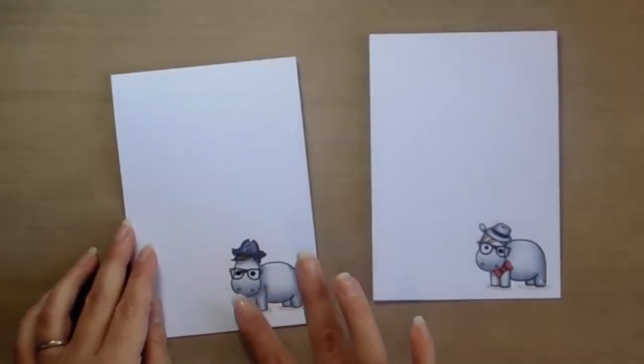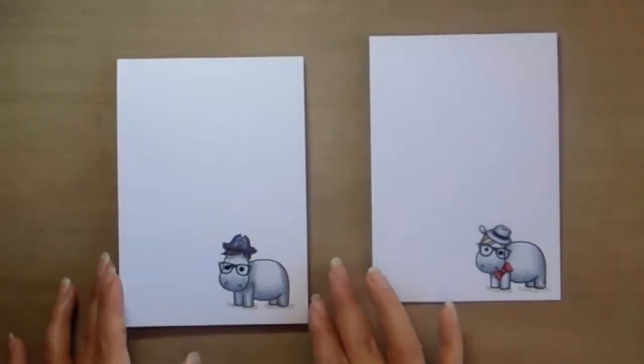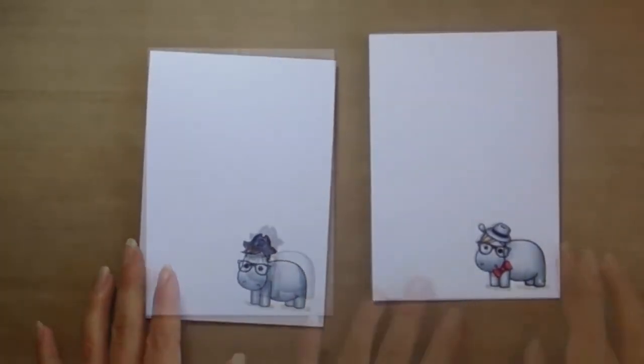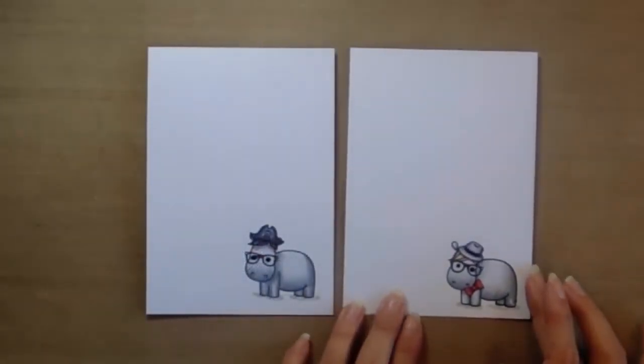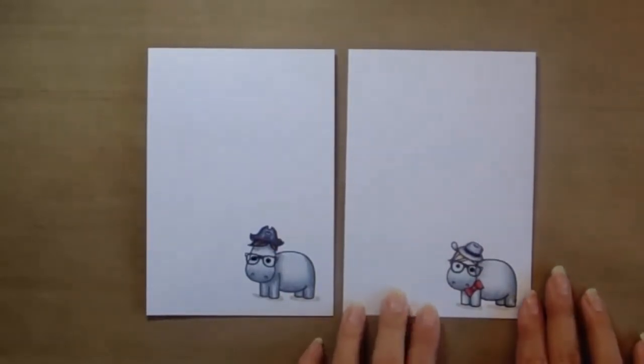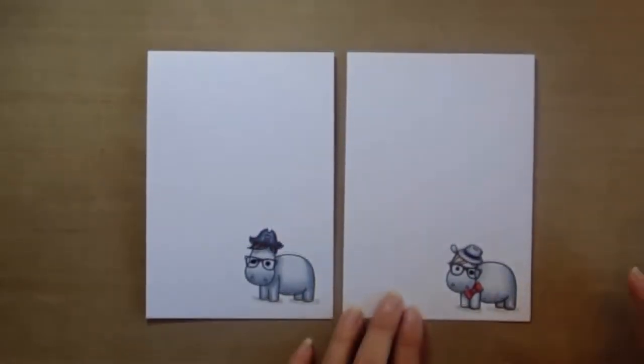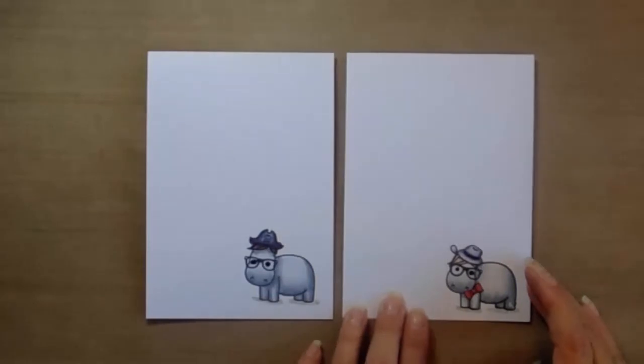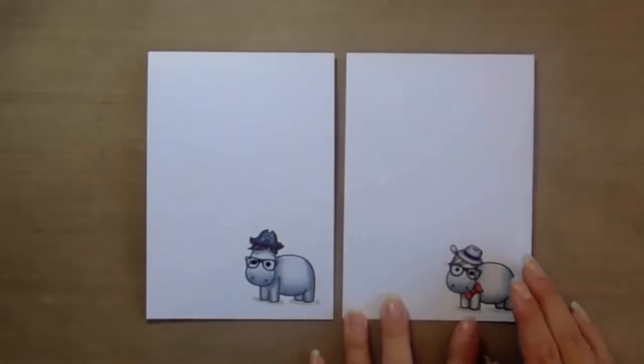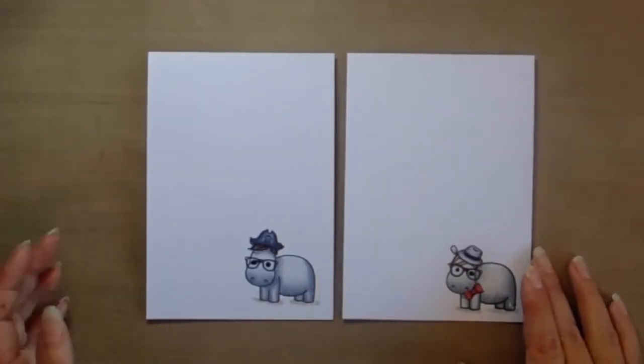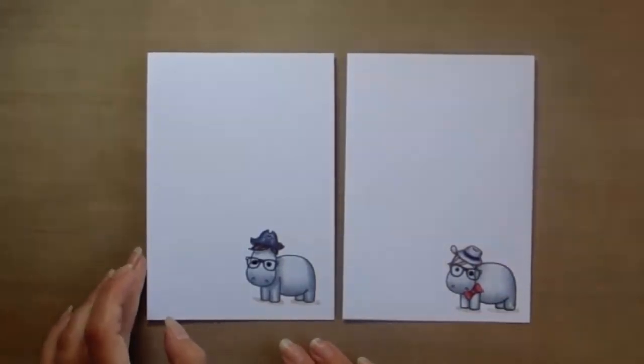The masking technique allows you to create a perfectly flat card with no bumpy edges. It's all flat apart from the little eyes that I've popped on. The fussy cutting technique allows for a bit more wiggle room, a bit more play time. You do not need to stamp your accessories first and then the character. You can stamp the character and then decide what accessories are going on it. The masking technique I feel needs a bit more forward planning than the second fussy cutting technique.